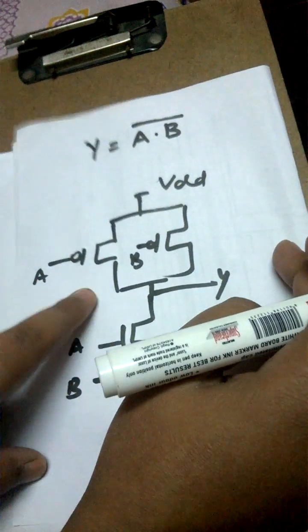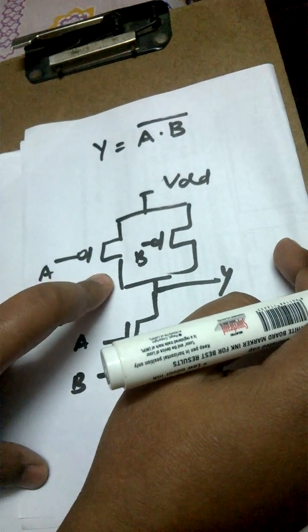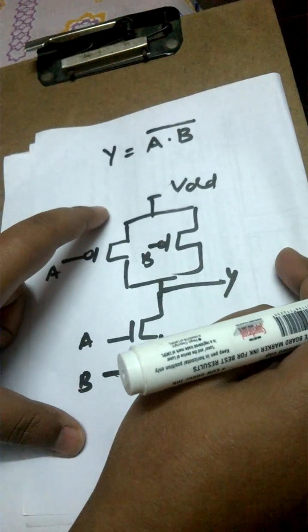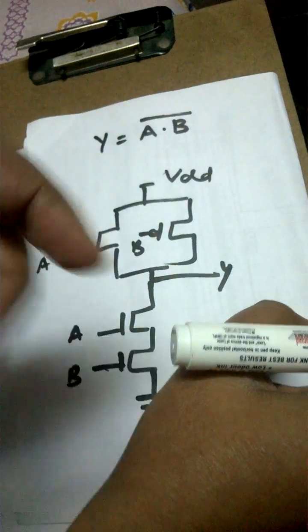So I'm not using N-type depletion type in the pull-up network here. I am using only the PMOS devices. NMOS and PMOS, a combination is used, so this structure is known as a CMOS structure. Thank you.